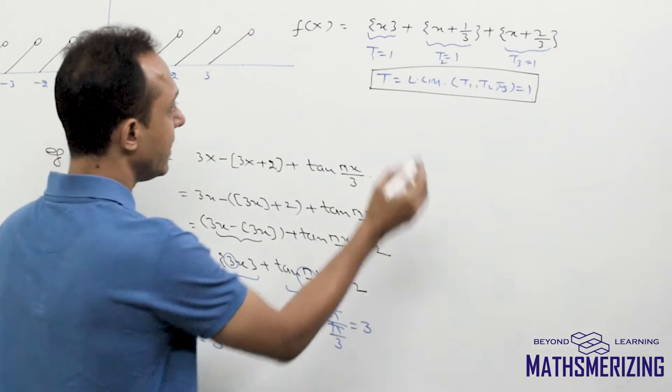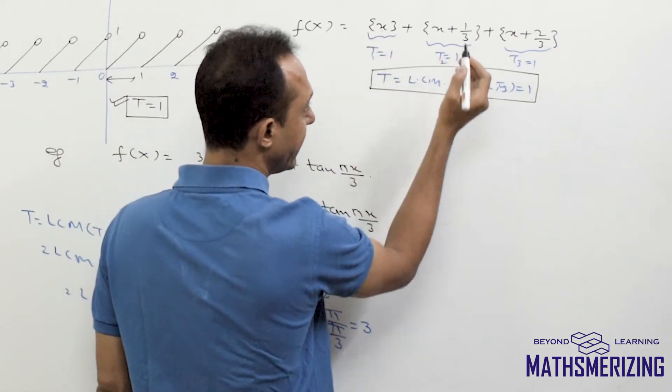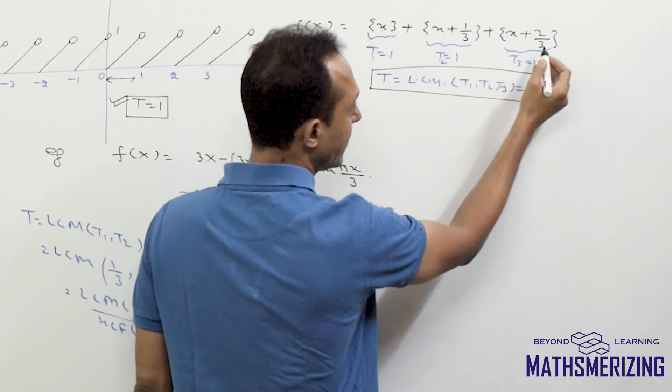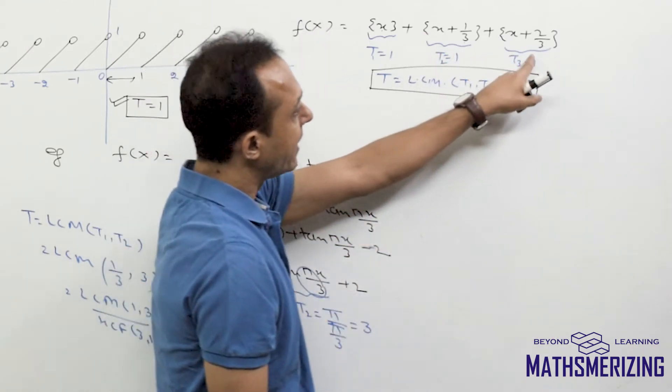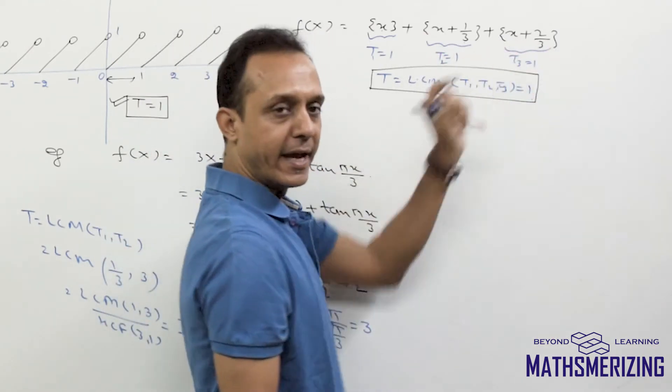So what you know is, here this x, it is displaced by 1 by 3, and then 1 by 3 is displaced by 2 by 3. And if I write 1 by 3 again to 2 by 3, it will become x plus 1.